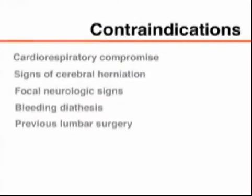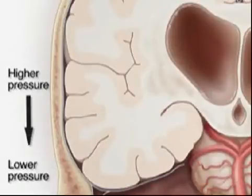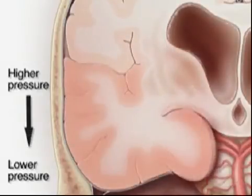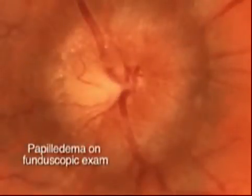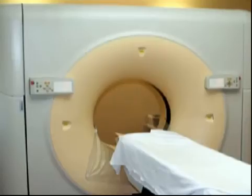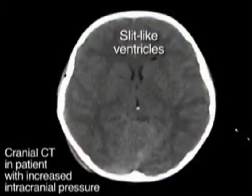There are specific contraindications to lumbar puncture. The condition of patients with cardiorespiratory compromise may worsen as a consequence of the position they need to assume for lumbar puncture. The procedure should also be avoided in patients with signs of cerebral herniation, incipient herniation, or increased intracranial pressure, and in those with focal neurologic signs. In such patients, cranial CT should be performed before lumbar puncture, although CT may not reveal signs of increased intracranial pressure.